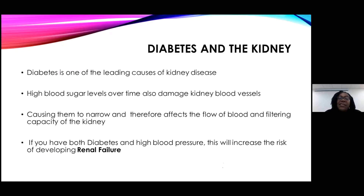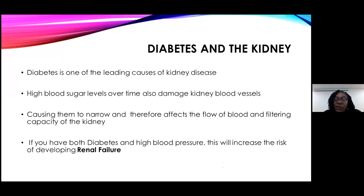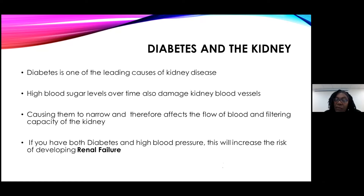Diabetes is one of the leading causes of kidney disease. High blood sugar over time causes damage to kidney vessels, causing narrowing of those smaller vessels that lead to the filtering units. The flow is impeded and the capacity of the kidney to filter is also decreased. If you have both diabetes and high blood pressure, this will even more increase the risk of you developing renal failure.